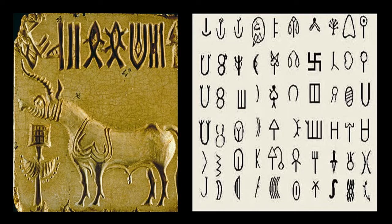Here you can see the Harappan script. Each of these symbols represents a particular word. The Harappan script is boustrophedon — from right to left and left to right in alternate lines.